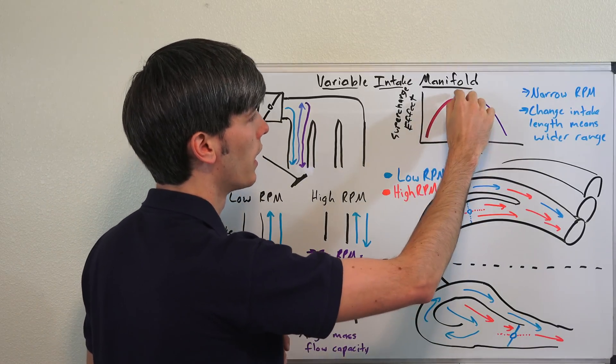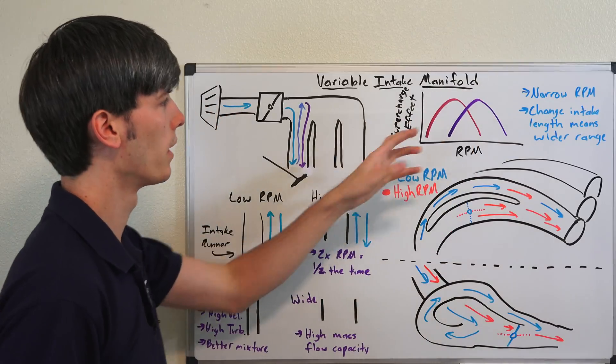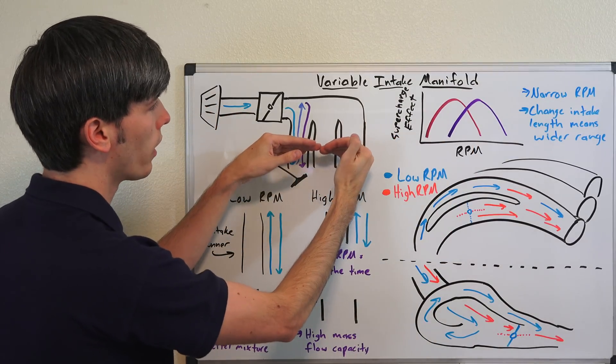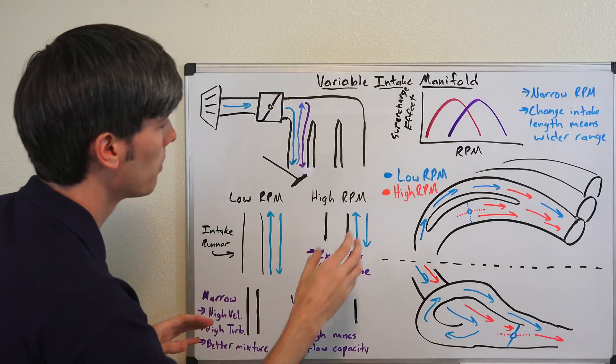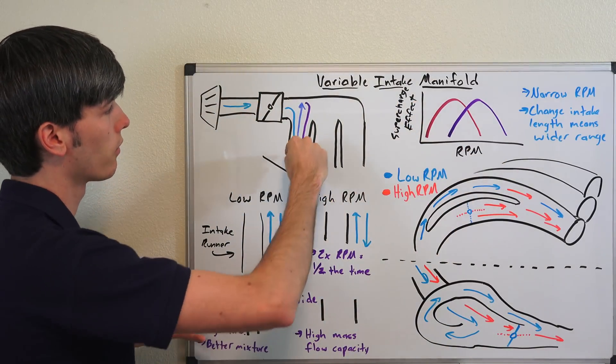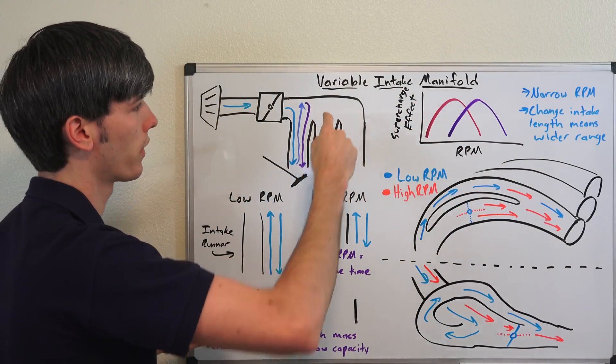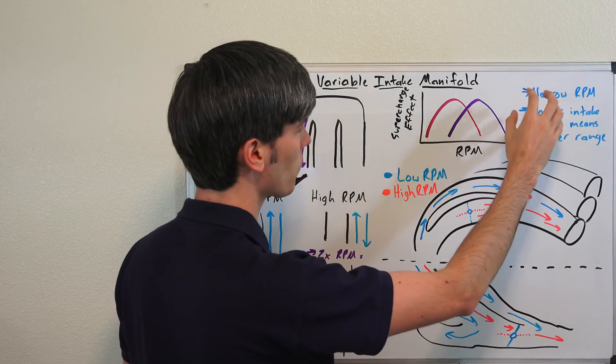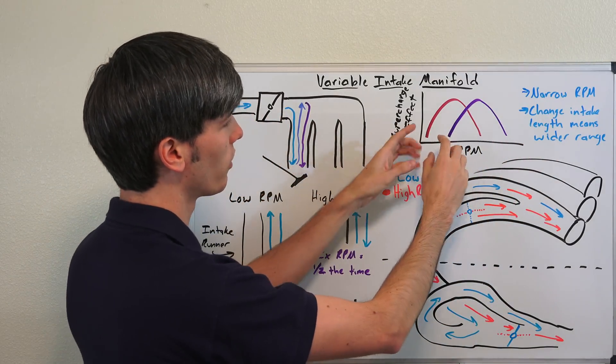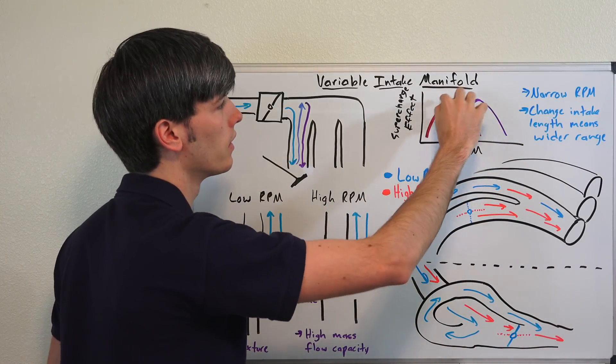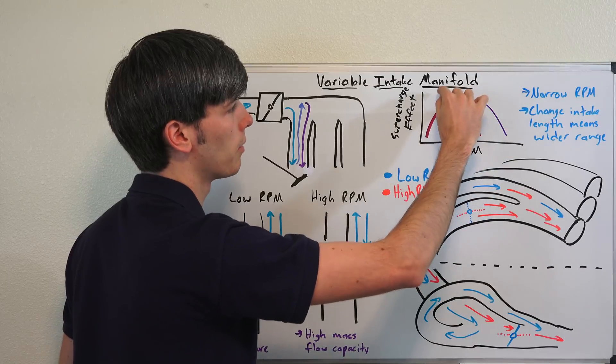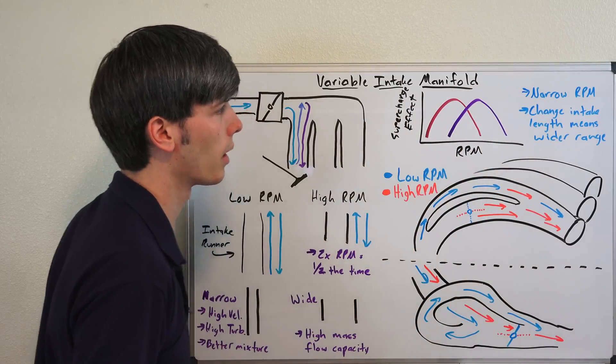But just a simplified version - it's going to be most effective at one RPM. Now if you shorten the length of these runners, it's going to push that over into the higher RPM range because you're going to have less time for that to bounce back and forth, that air to bounce back and forth. So if you have both of these available, you can see you've got these two peaks here, and you have a better operating condition for your engine where you can maintain power across a broader RPM range.